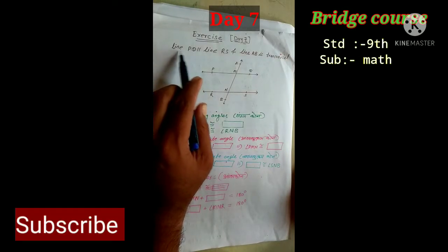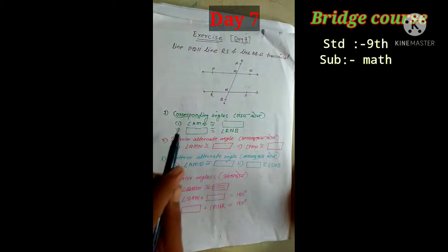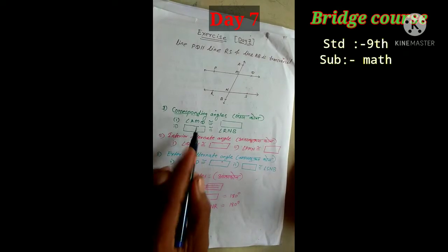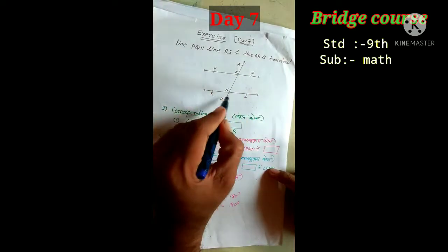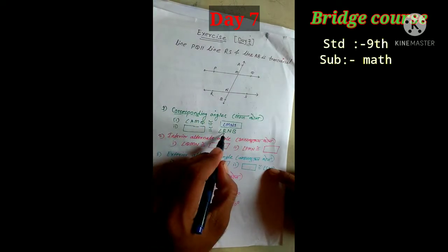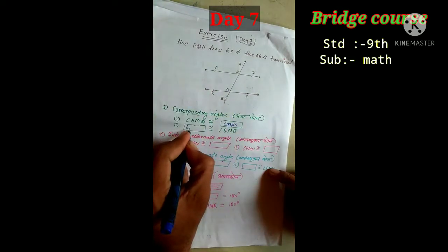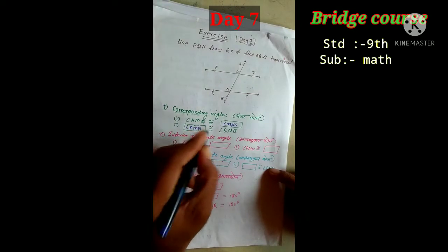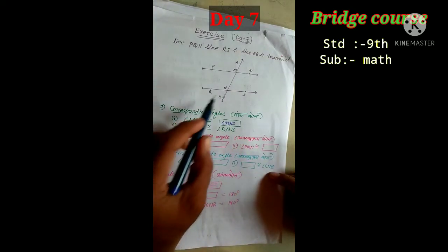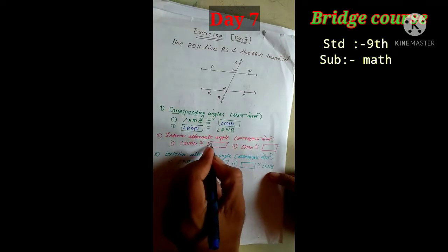The line PQ is parallel to the line, and line AB is a transversal. The corresponding angle is the corresponding angle. The line is RnB. RnB is the corresponding angle. The angle is PmN. The interior alternate angle is the corresponding angle. QmN is the corresponding angle, and RnB is the corresponding angle.